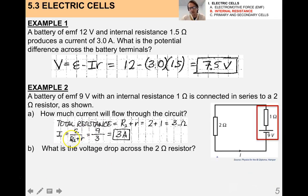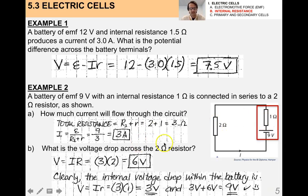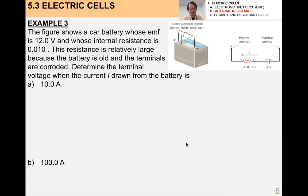We apply Ohm's law, but the total resistance is the 2-ohm resistor plus the 1-ohm internal resistance, giving us 3 ohms. That yields a current of 3 amps — and that's what we'd actually measure in the laboratory. The voltage drop across the 2-ohm resistor is 6 volts, so the internal voltage drop within the battery is 3 volts, because 3 + 6 = 9, which equals the EMF — the voltage rating of the battery.